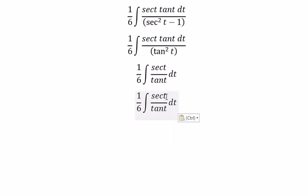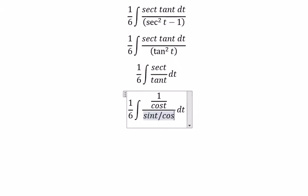And this one we can put about 1 over cosine t. Tangent t we change for sine t over cosine t.